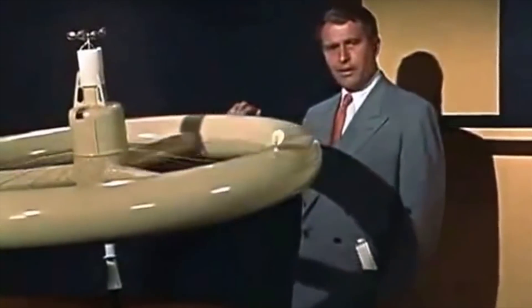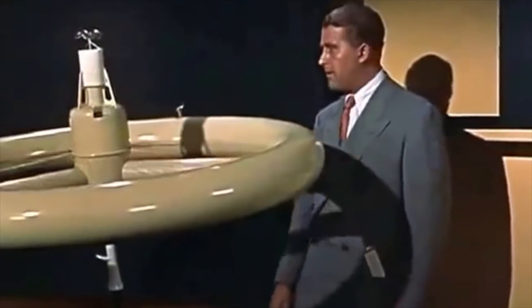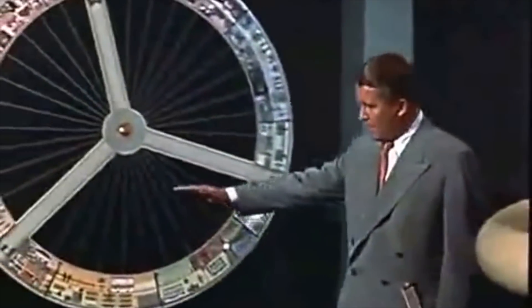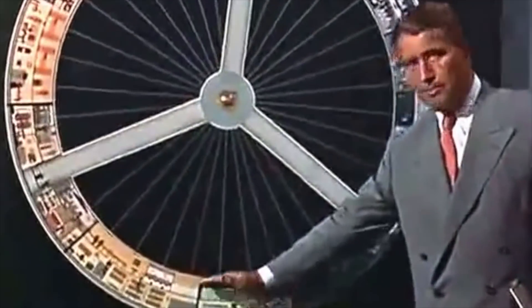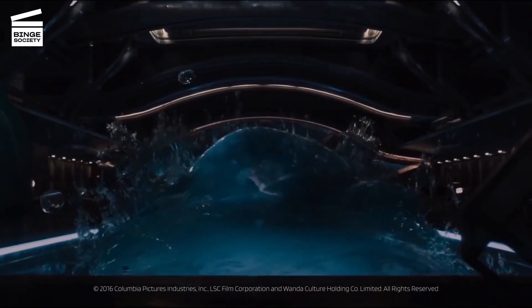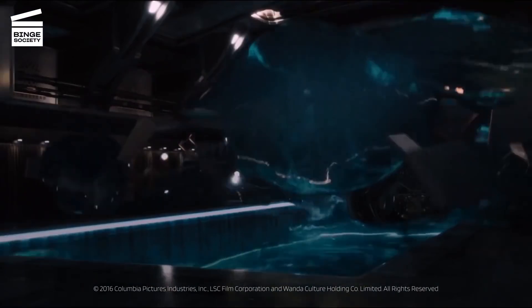The biggest problem people seem to have when thinking about artificial gravity is thinking that anything that rotates has gravity without putting any thought into which way those forces go, how big the structures need to be, and how fast they have to spin. Maybe now, after these demonstrations, everyone can be a little bit more grounded when they're talking about artificial gravity.